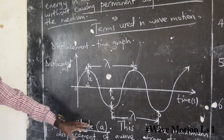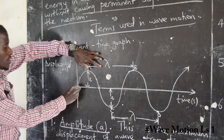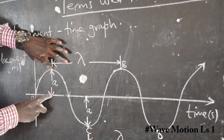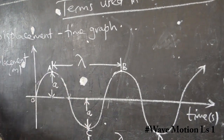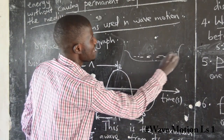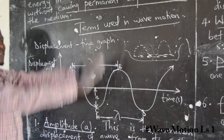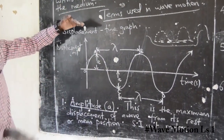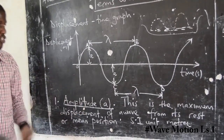Looking at our diagram, the first term is amplitude. On the diagram I have indicated from the rest position up to the maximum point and also down to the minimum point — this displacement is what we call amplitude. When a particle is vibrating, for example if this represents water in a sea, it is at a resting level and can vibrate up and down. The displacement a wave makes to the maximum point from its resting position is what we call amplitude.